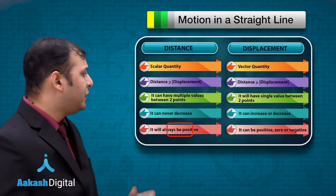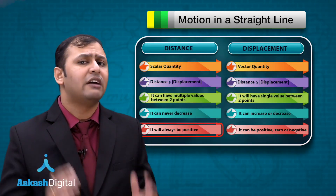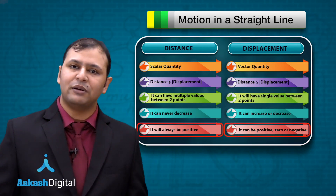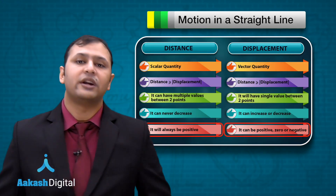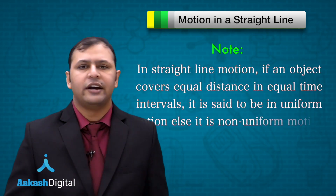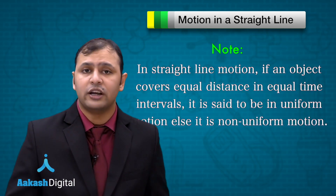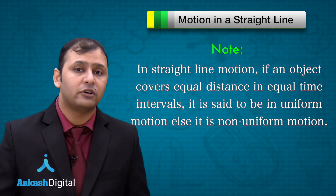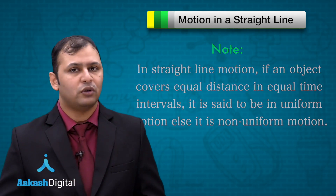Distance is always positive — it can never be negative — whereas displacement can be positive, zero, or negative. And the last point: an object is said to be in a state of uniform motion if it is covering equal displacement in equal intervals of time; otherwise the motion would be non-uniform.